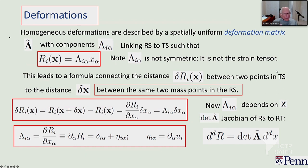When we talk about elastic media, we're really talking about deforming some original state — the reference state. The simplest way to go about that is to say there is a tensor Lambda. Lambda I alpha operating on the reference space gives R of X. This is the deformation tensor, not the strain tensor — they're often confused. The strain tensor is manifestly symmetric under interchange of indices, whereas the deformation tensor has indices corresponding to the two spaces: alpha for the reference space and I for the target space.